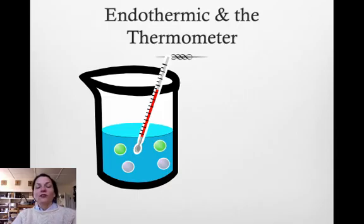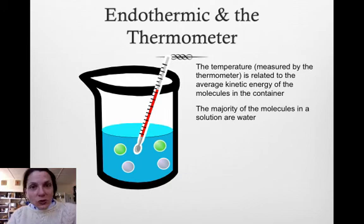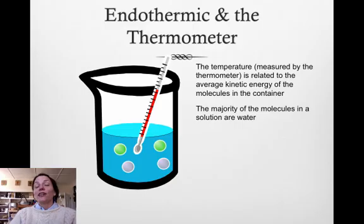If you put a thermometer in an endothermic reaction, yep, you guessed it, temperature is going down because the surroundings are getting colder. So how does that translate to kinetic energy? Well, if the surroundings are getting colder, that means the kinetic energy is decreasing from the surroundings, increasing in the system itself.